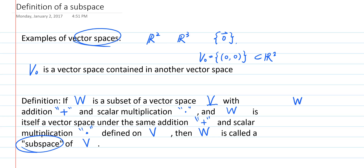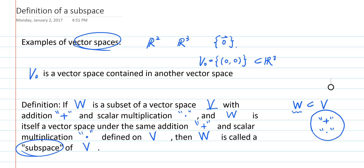First, W is a subset of V, which means every element of W is also an element of V. Second, V is a vector space — not just any set, but a set that is a vector space. For example, R2 is a vector space with component-wise addition and scalar multiplication of two-tuples. And third, W under the same addition and scalar multiplication is itself a vector space. That's why a subspace W is basically a vector space contained in another vector space V, with the same addition and scalar multiplication.